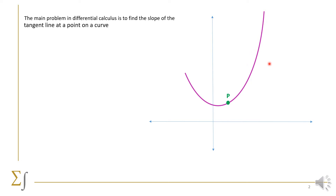As Q gets closer to P, let's see what happens to the secant line. We get closer and closer to P. Here is the secant line. Until Q coincides with the point P, the secant line will be the red tangent line in front of us.